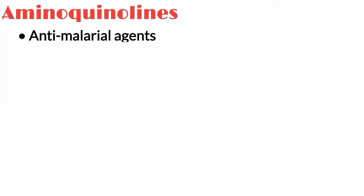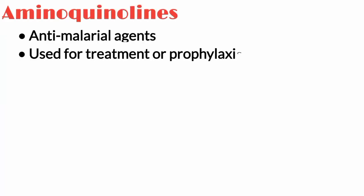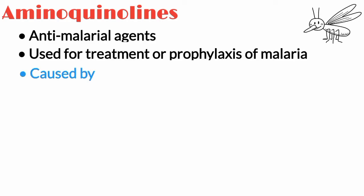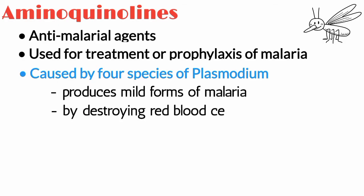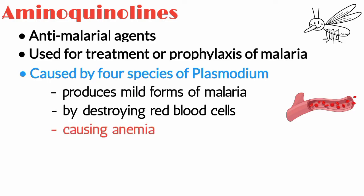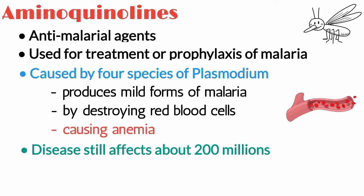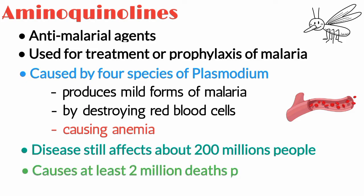Aminoquinolones are antimalarial agents used for the treatment or prophylaxis of malaria. Malaria is caused by four species of plasmodium, three of which produce mild forms of malaria by destroying red blood cells in peripheral capillaries, thus causing anemia. This disease still affects about 200 million people and causes at least 2 million deaths per year.